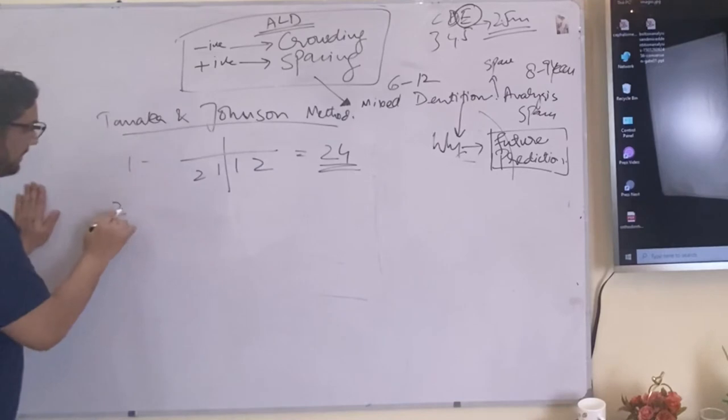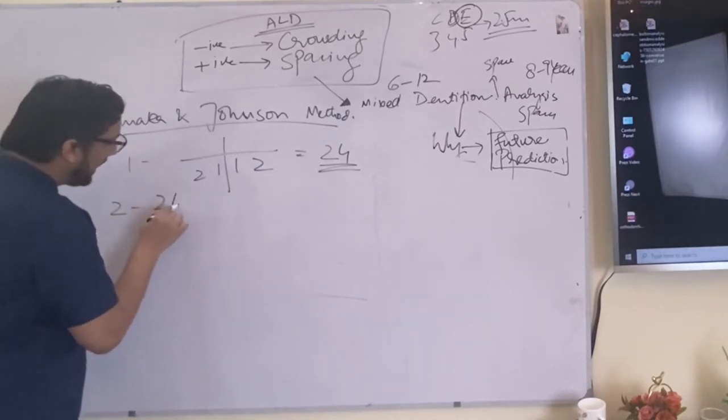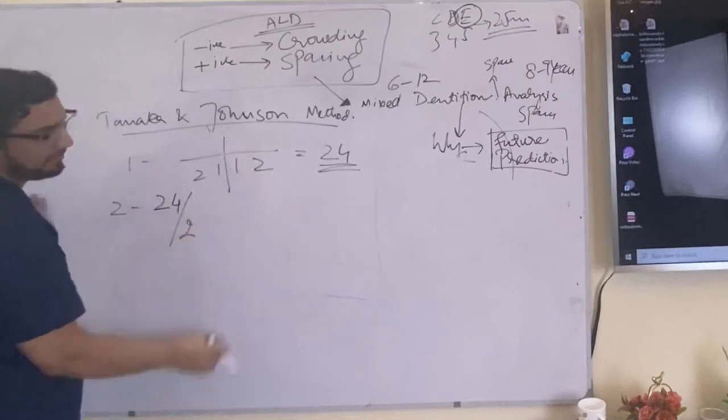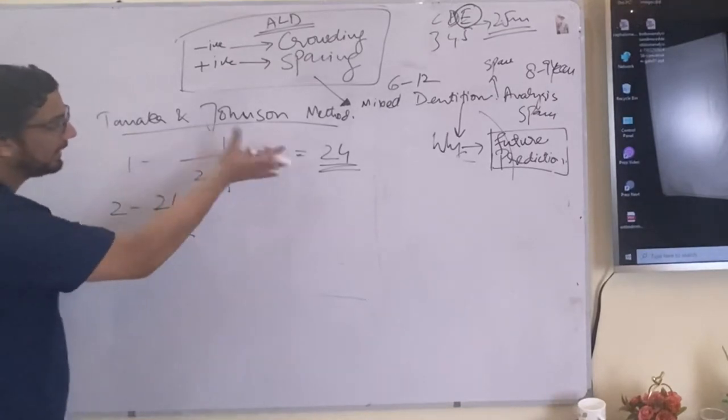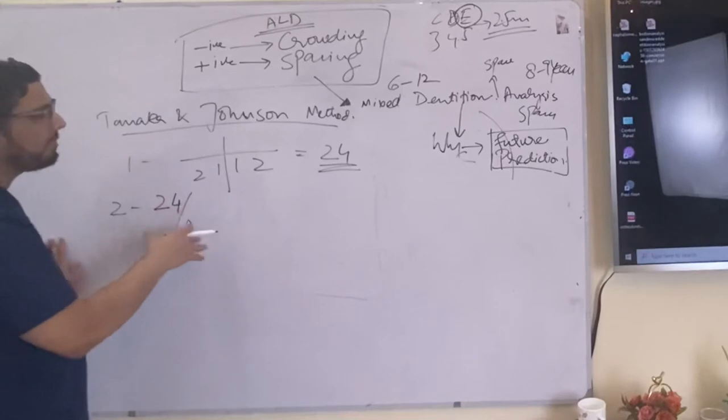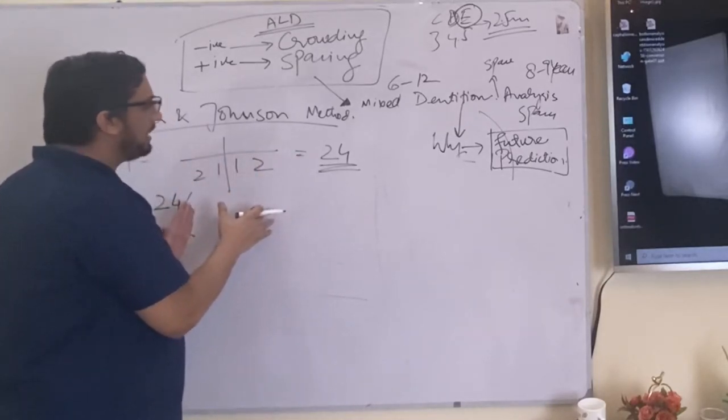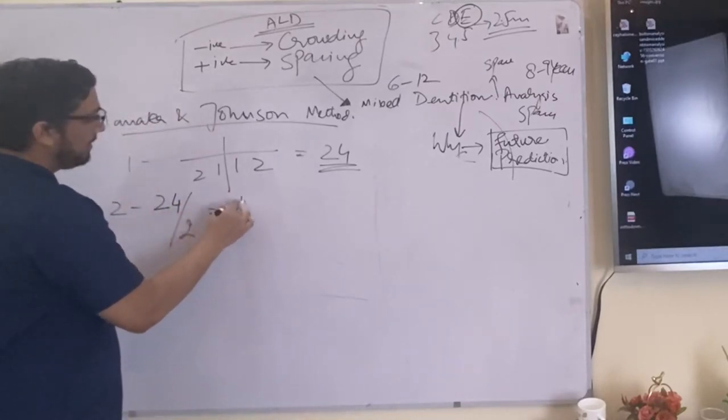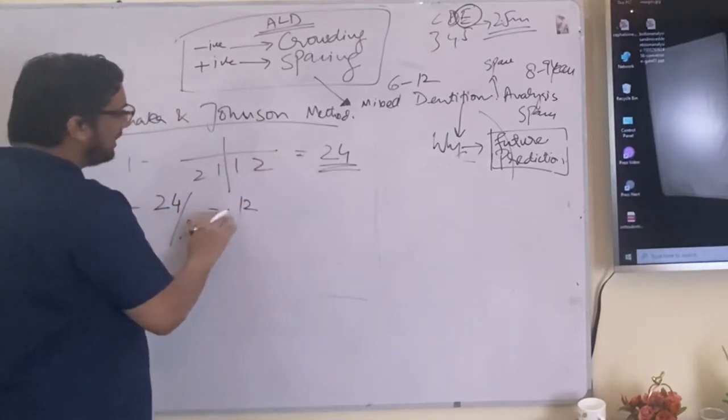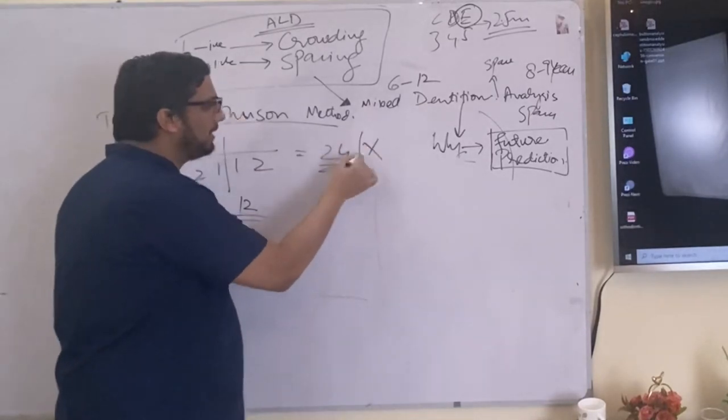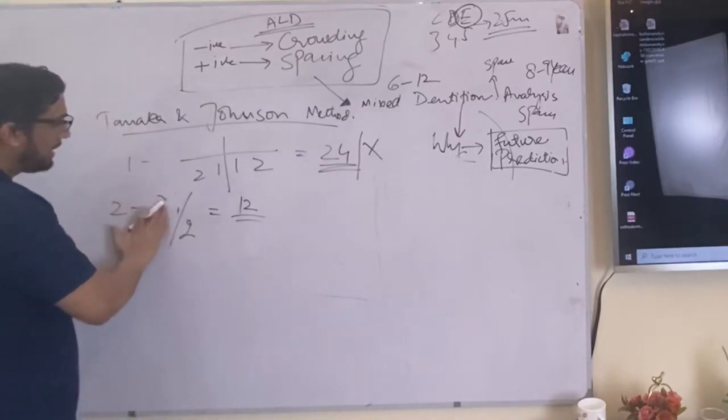Then the second step. In the second step you will divide whatsoever is the value by 2. Why? To basically you want to take the half of it, half sided. That's why you make it half side. First you take the average of the lower central lateral, then you take the half. Let's say make it, if the value was 24 make it like 12 or we can have a X, you will divide the X value by 2.